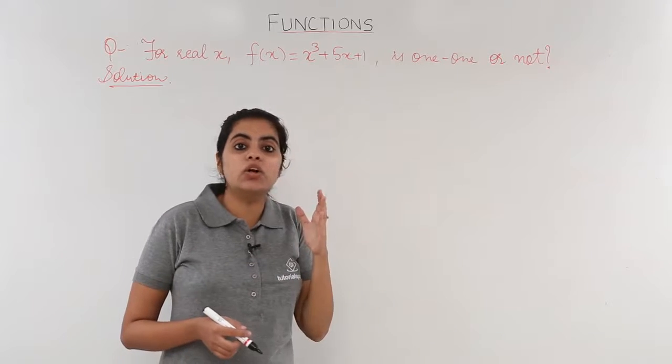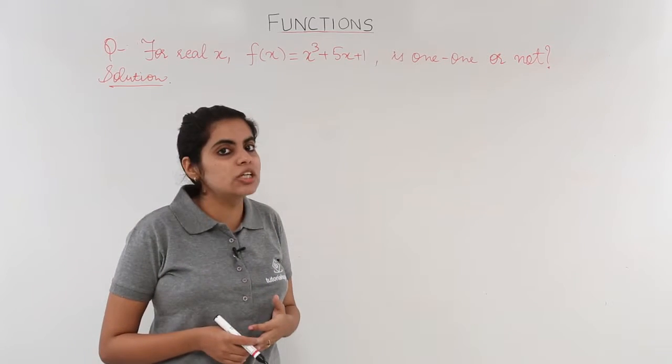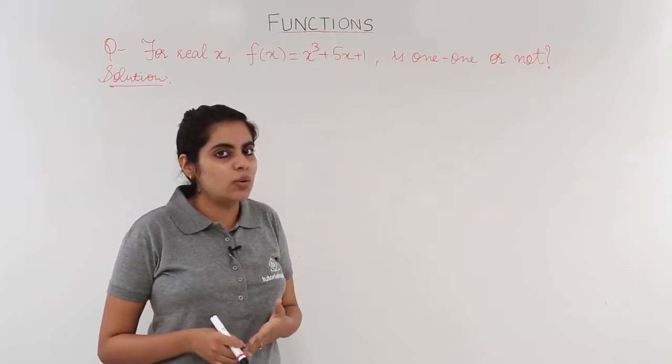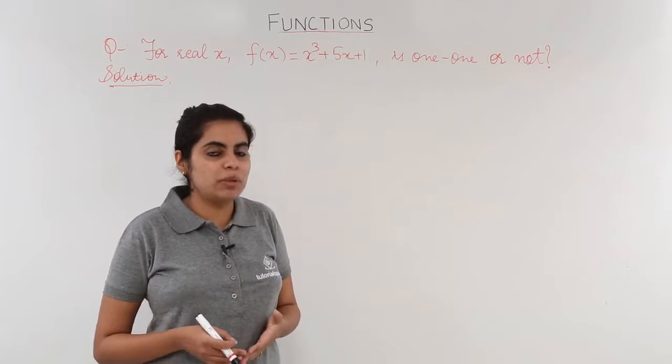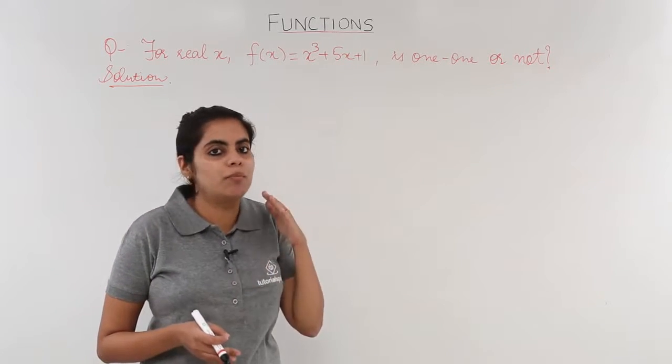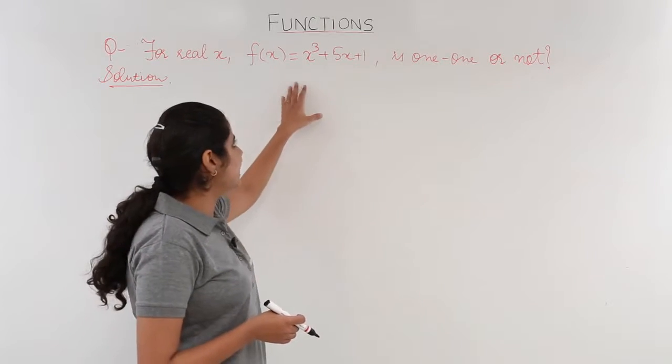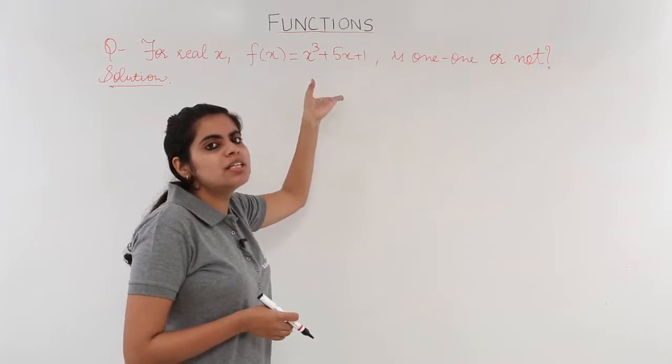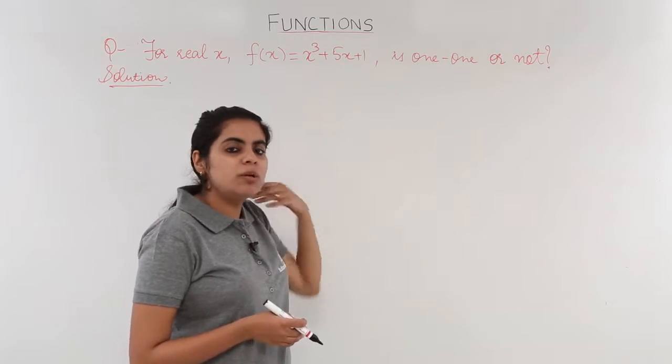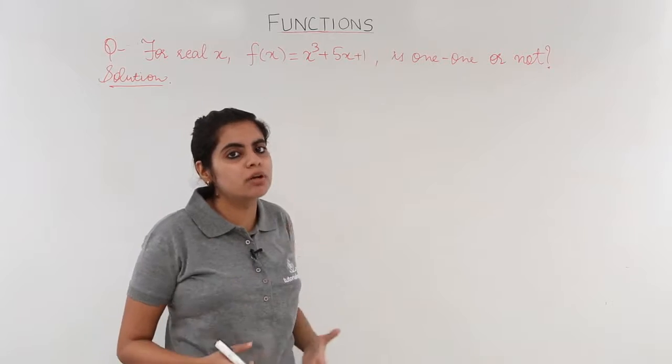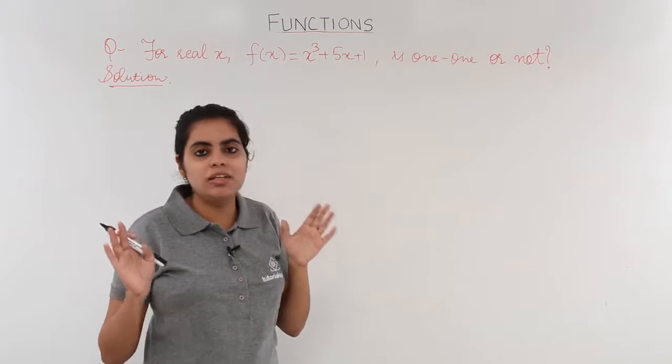Now let's get reminded of our previous knowledge of one-to-one functions. How to check whether it is one-to-one? We have a method called the graph method. You draw a graph, you draw a parallel line to the x-axis. But it is very tedious to draw a graph for these type of questions. You have to keep putting the values, you don't get a perfect graph out of it. So discard the first method.